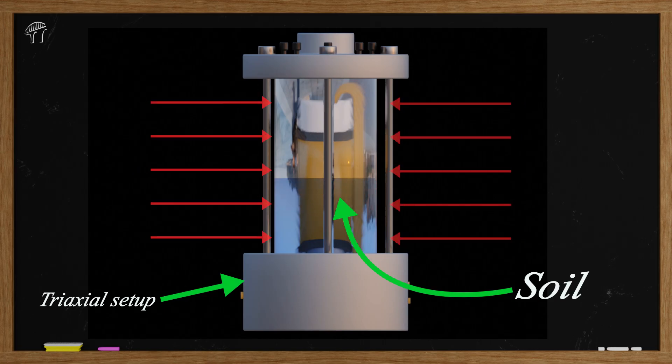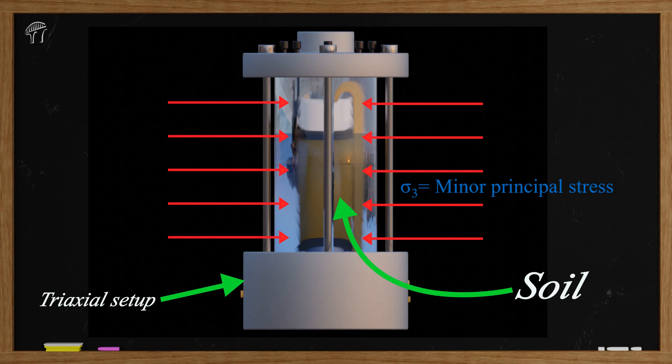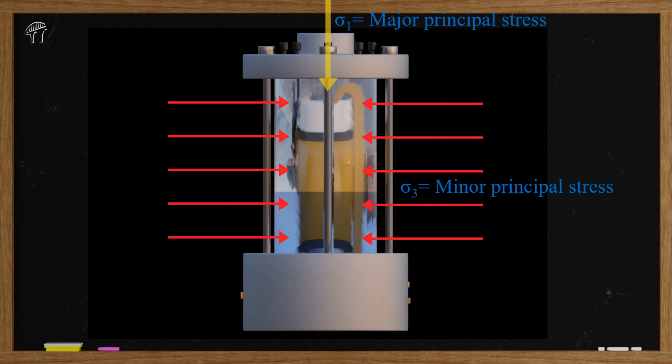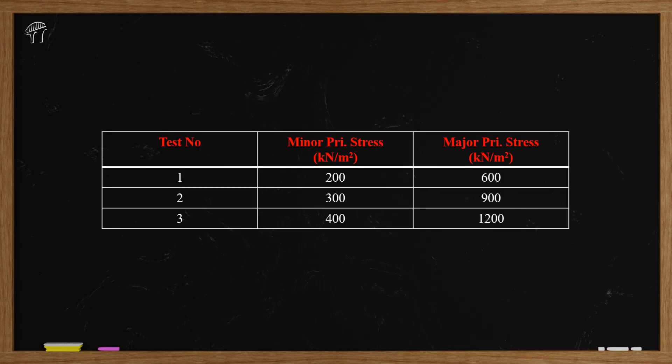In case of triaxial test, minor principal stress is equal to cell pressure applied using pressurized water as you can see over here. And major principal stress is nothing but the vertical stress applied from the top. During a triaxial test, vertical stress is increased by keeping cell pressure constant till the soil fails in shear. The value of cell pressure and vertical stresses at the point of failure are given to us in the numerical.